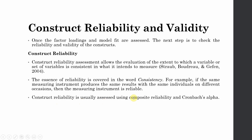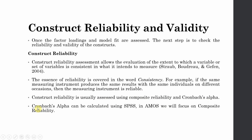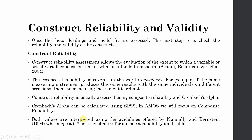Construct Reliability is usually assessed using Composite Reliability and Cronbach Alpha — two ways through which you can establish Construct Reliability. Cronbach Alpha can be easily calculated using SPSS. In this series, the focus will be on AMOS and Composite Reliability calculation using AMOS. Both values are interpreted using the guidelines offered by Nunnally and Bernstein, who suggest 0.7 as a benchmark for acceptable reliability.